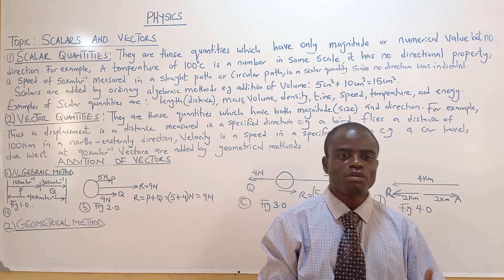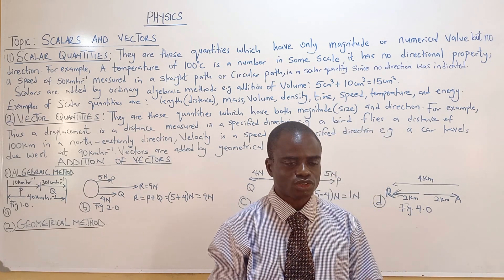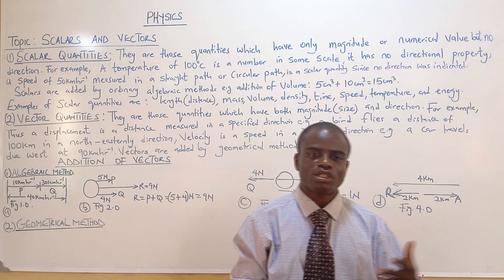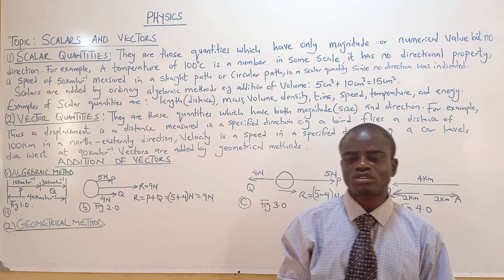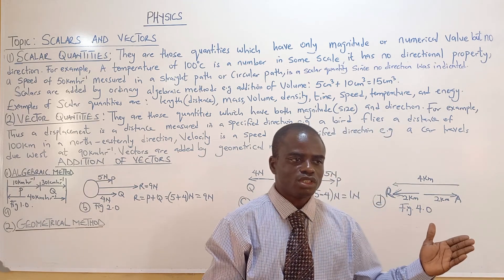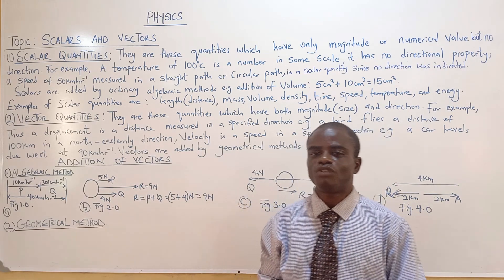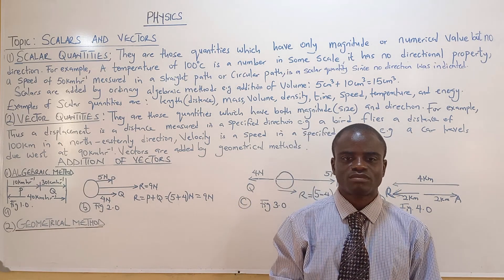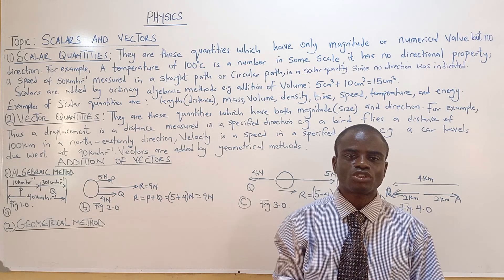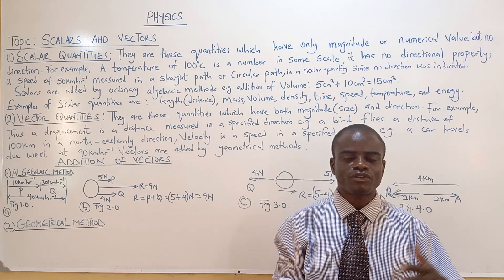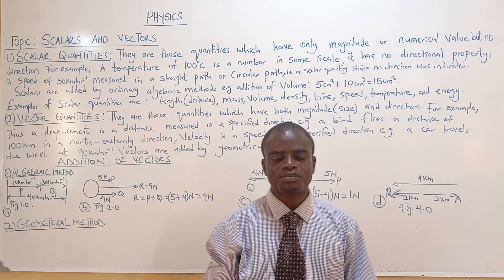When you say the man moves 2 kilometers per hour in the easterly direction, you have changed it from speed to velocity. These are the ways to differentiate when something is a scalar or vector quantity.